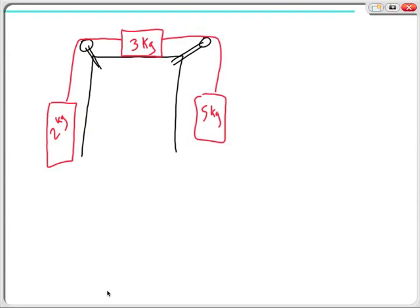Okay, this is a chapter 4 honors problem, something similar to what you could expect to see on the test. I've already drawn it out. We have a table here with a 3kg mass that's sitting on it. Then we also have a 5kg off to the right that's being attached by a rope, and a 2kg on the left.